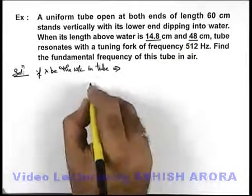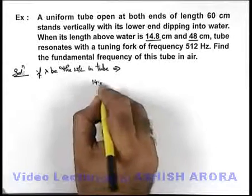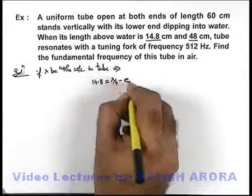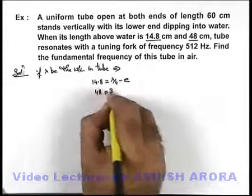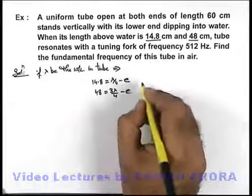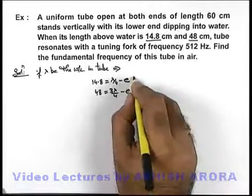So here we can write, first length which is 14.8, this should be equal to lambda by 4 minus e, and second length 48 should be 3 lambda by 4 minus e. If we just solve this expression for e, we can see here...